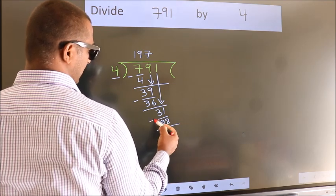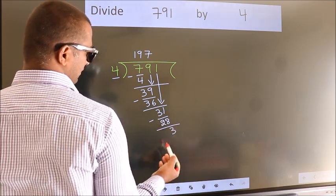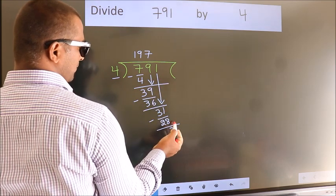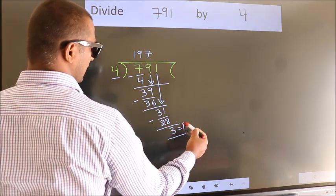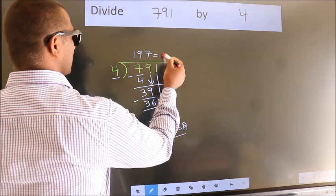Now we subtract. We get 3. No more numbers to bring down, so we stop here. This is our remainder. This is our quotient.